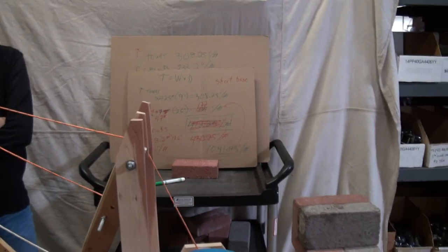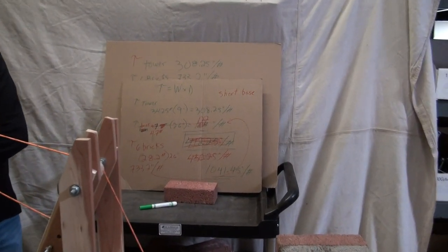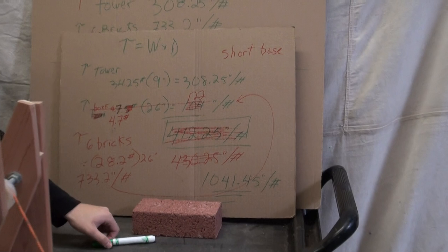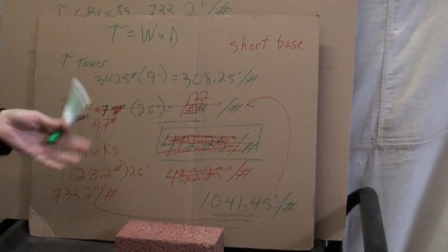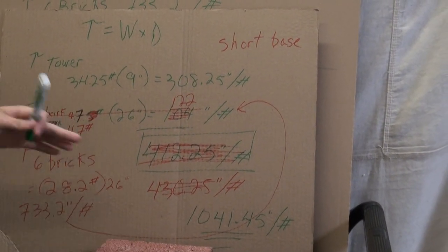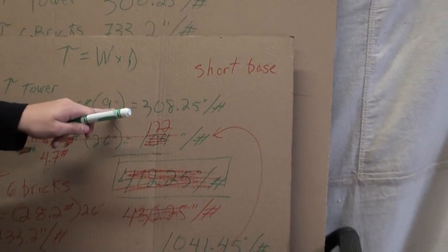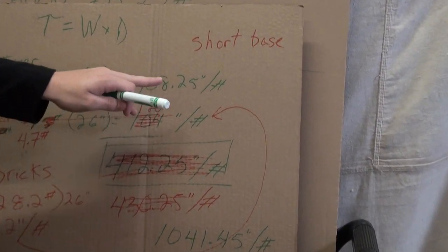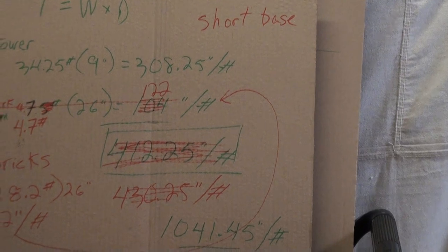So what's the torque of the tower? We need the torque of the tower which in a previous video we did, and that's weight times distance. We got 308.25 inch pounds of torque for the tower.